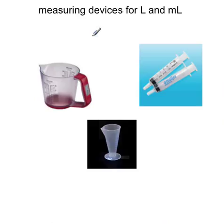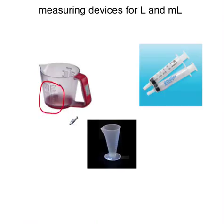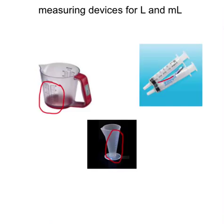Let's look at a few measuring devices we can use for litres and millilitres. We've got a measuring jug with some units, a small measuring cup with increments for measurement, and little plastic syringes with units of measurement for litres and millilitres.